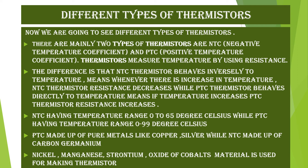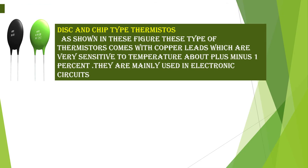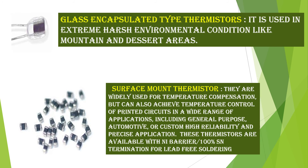These materials are used for making disc and chip type thermistors as shown in the figures. These thermistors come with copper leads, are very sensitive to temperature at about plus or minus one percent, and are mainly used in electronic circuits. Glass encapsulated thermistors are used in extreme harsh environmental conditions like mountain and desert areas.